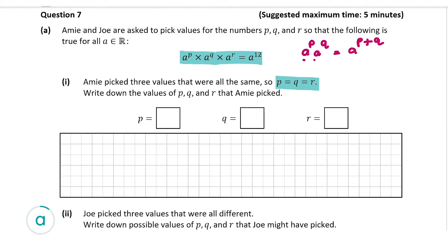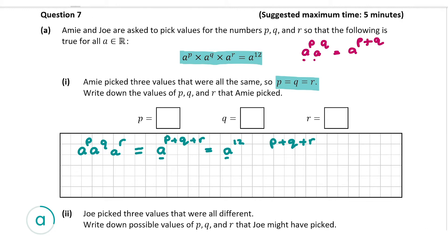When the bases are the same, you can add the powers when they're multiplied together. The rule applies for three values too, so A to the power of P times A to the power of Q times A to the power of R can be rewritten as A to the power of P plus Q plus R, and we know that equals A to the power of 12. So P plus Q plus R equals 12, and since all three values must be the same, 4 plus 4 plus 4 equals 12, so the answer for all three is 4.